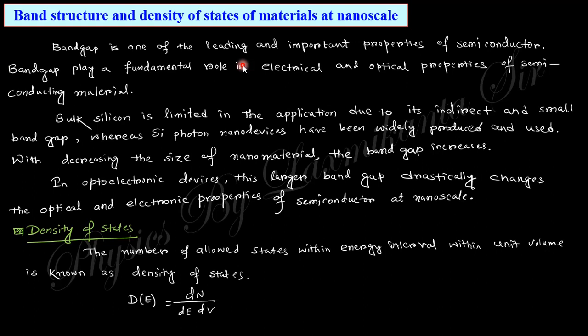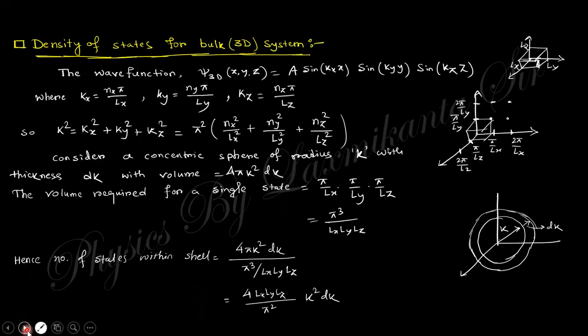The density of states of nanomaterials is very important. You need to derive the density of states for zero-dimensional, one-dimensional, two-dimensional, and three-dimensional nanostructures. The basic definition: the number of allowed states within an energy interval per unit volume is known as the density of states, written as dN/dE per unit volume.